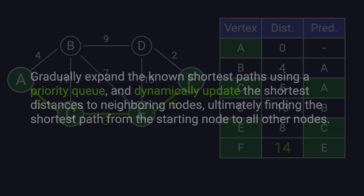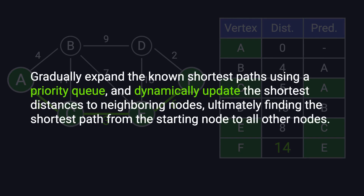In summary, Dijkstra's algorithm works by expanding the shortest known paths using a priority queue, dynamically updating the shortest distances to neighboring nodes, and ultimately finding the shortest path from the starting point to all other nodes.